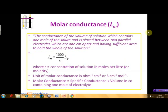Molar conductance, denoted by L-m, can be defined as the conductance of the solution which contains one mole of the solute dissolved in it, and is placed between two parallel electrodes which are at 1 cm distance from each other, and have sufficient area between them to contain the whole of the solution. Mathematically, L-m is equal to 1000 divided by C into L-sp, where C is the concentration of the solution in moles per liter, that is the molarity, and L-sp is the specific conductance. The unit of molar conductance is Ohm inverse cm squared per mole, or Siemen cm squared per mole.